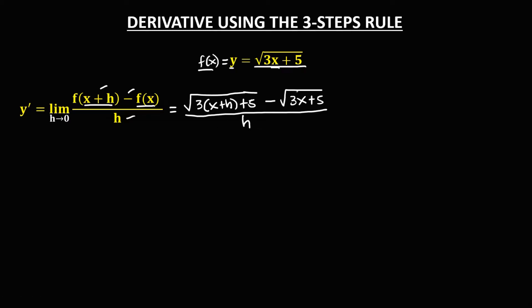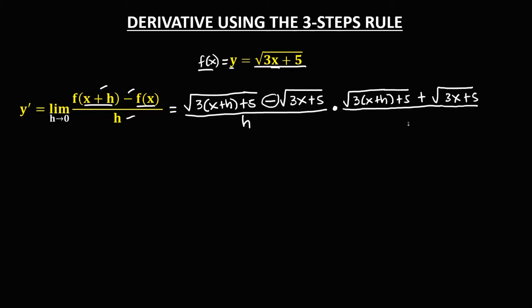To simplify and omit this radical, we multiply the numerator by its conjugate. That's the square root of 3(x plus h) plus 5. Since this term is minus, the conjugate uses plus, giving us plus the square root of 3x plus 5. The denominator is multiplied by the same expression: the square root of 3(x plus h) plus 5, plus the square root of 3x plus 5.